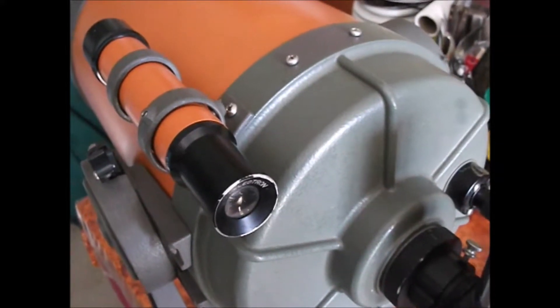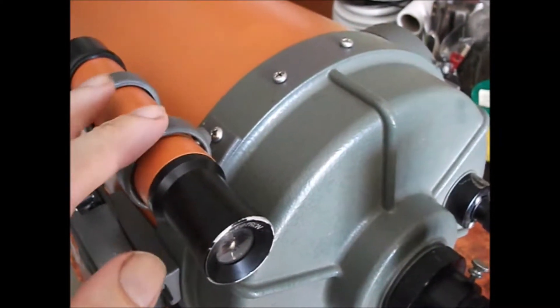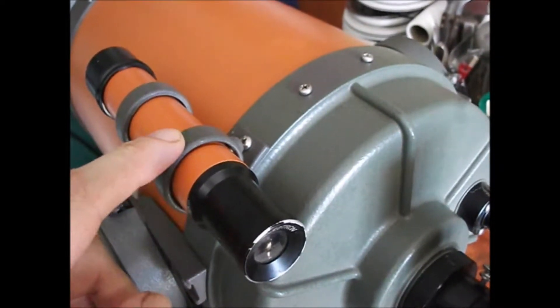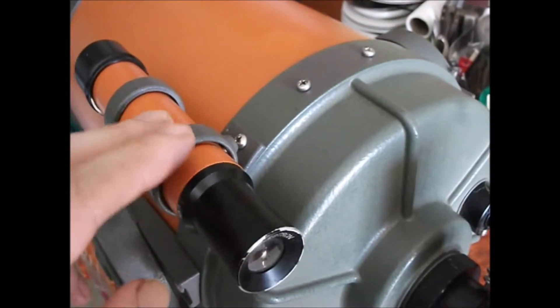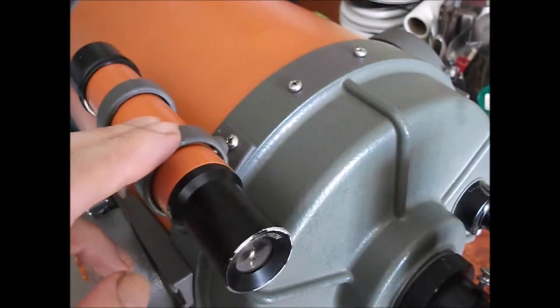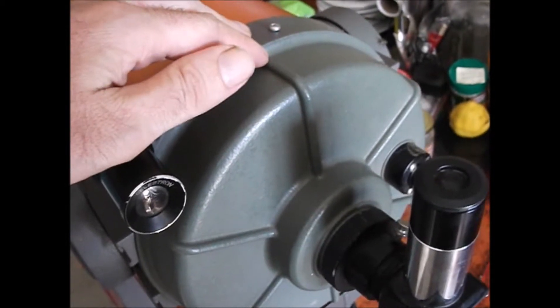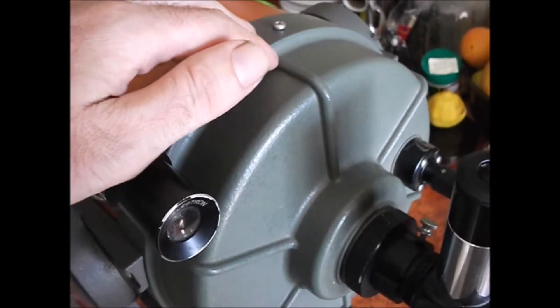This is a video on how to align the finder scope on your telescope. The reason for having a finder scope is it provides a modest amount of magnifying power but a wide field of view, whereas the main telescope provides a much higher amount of magnification but a very narrow field of view.